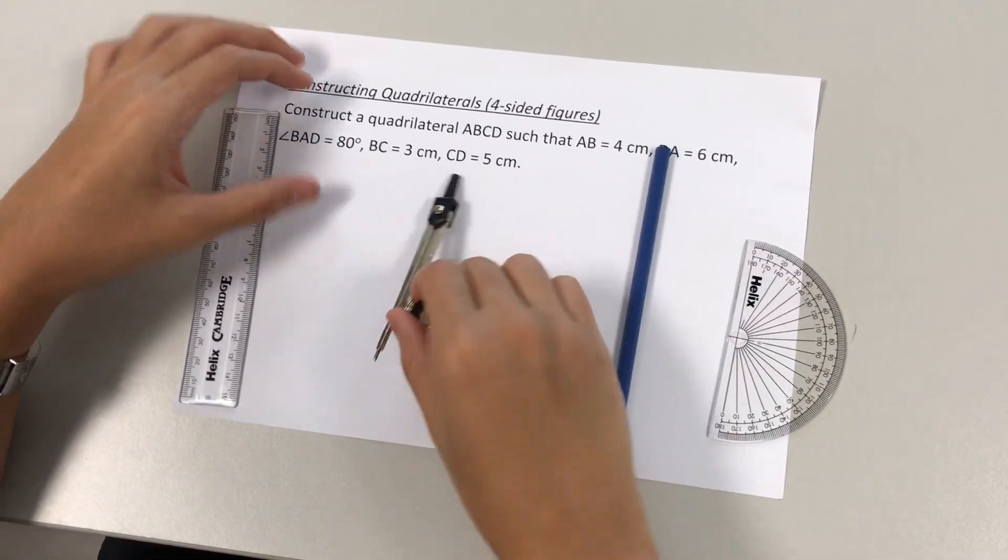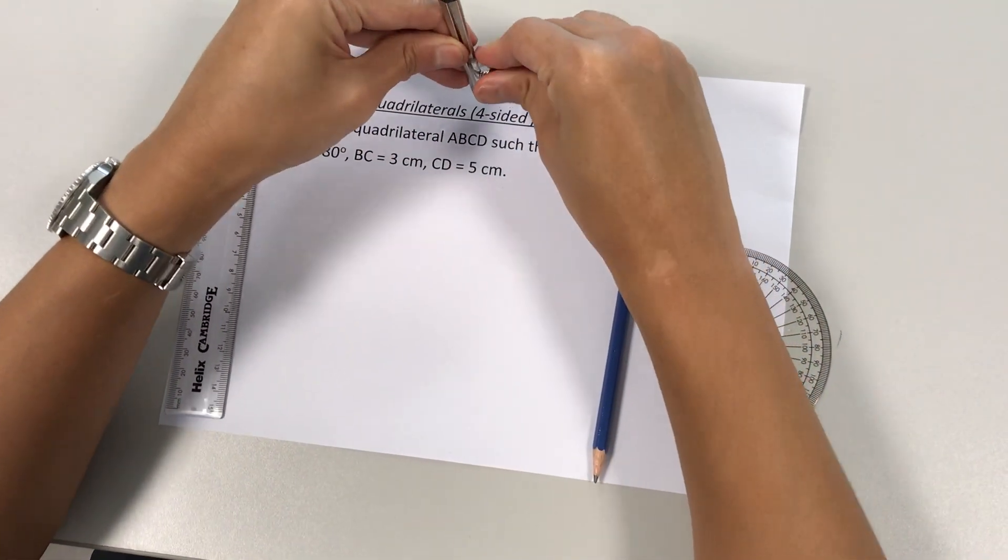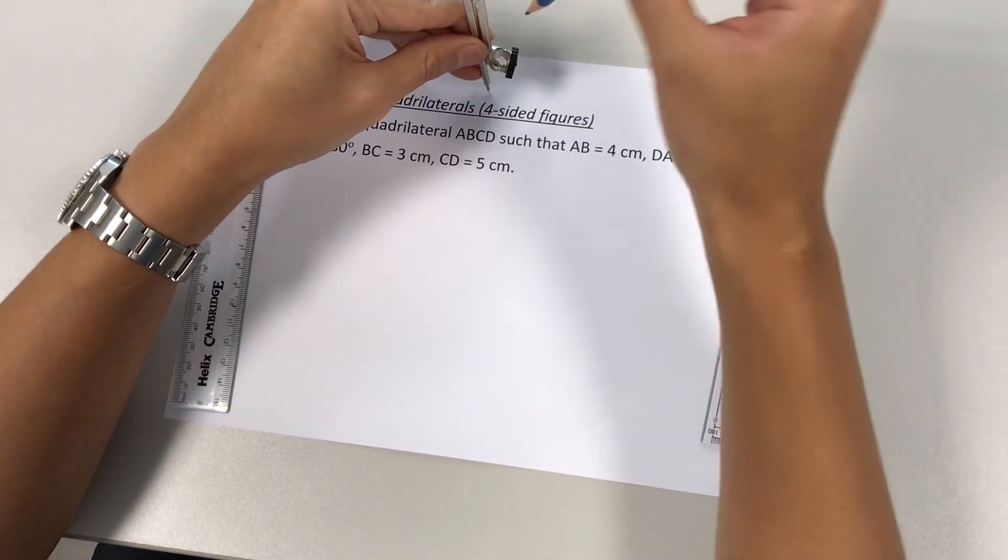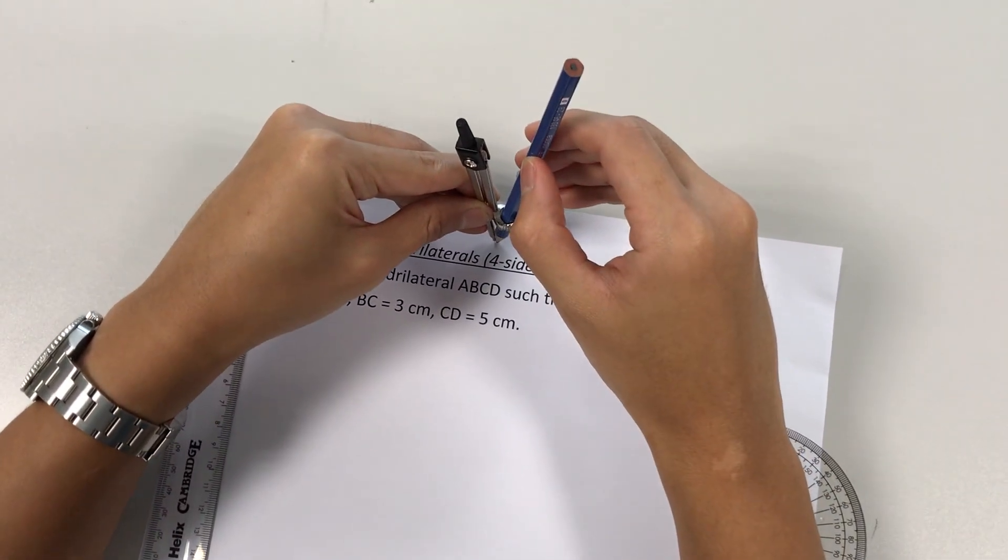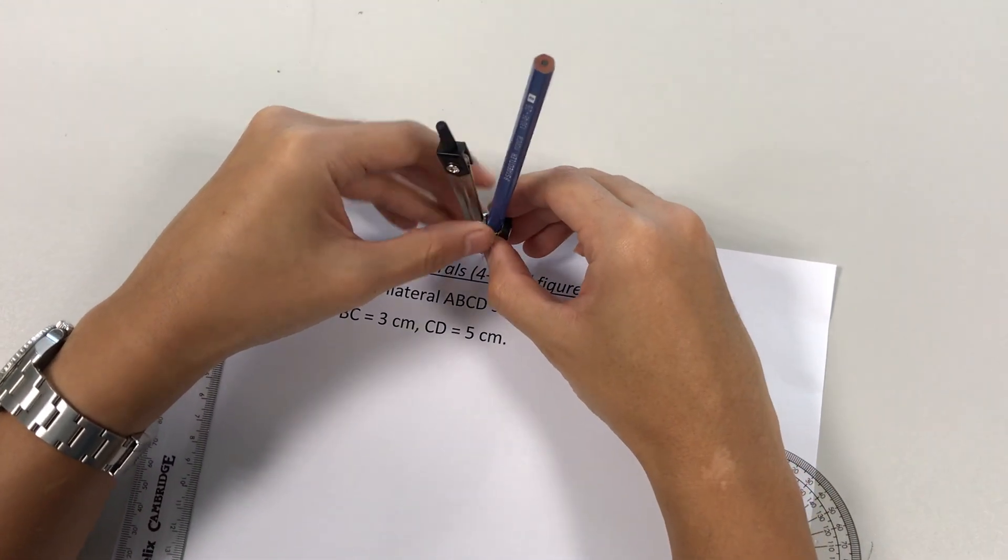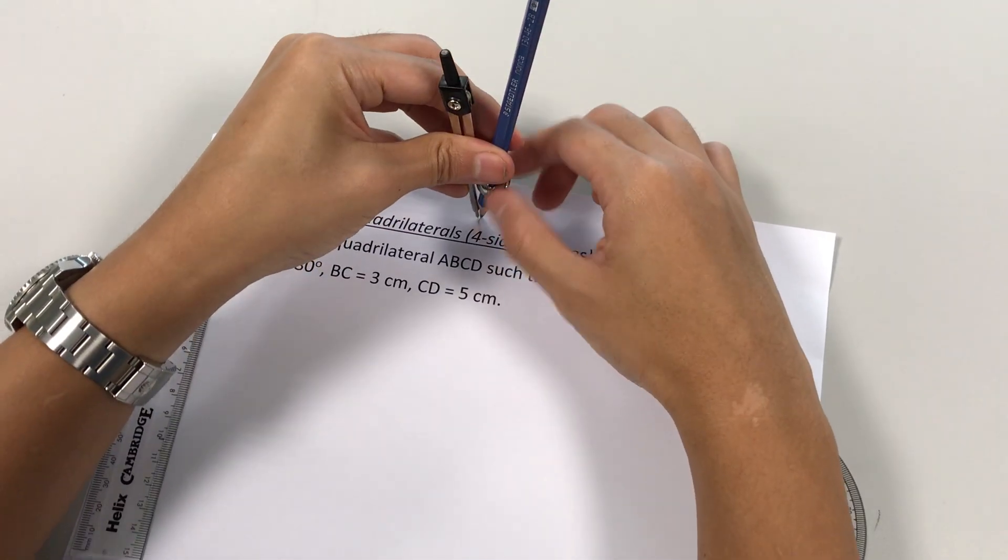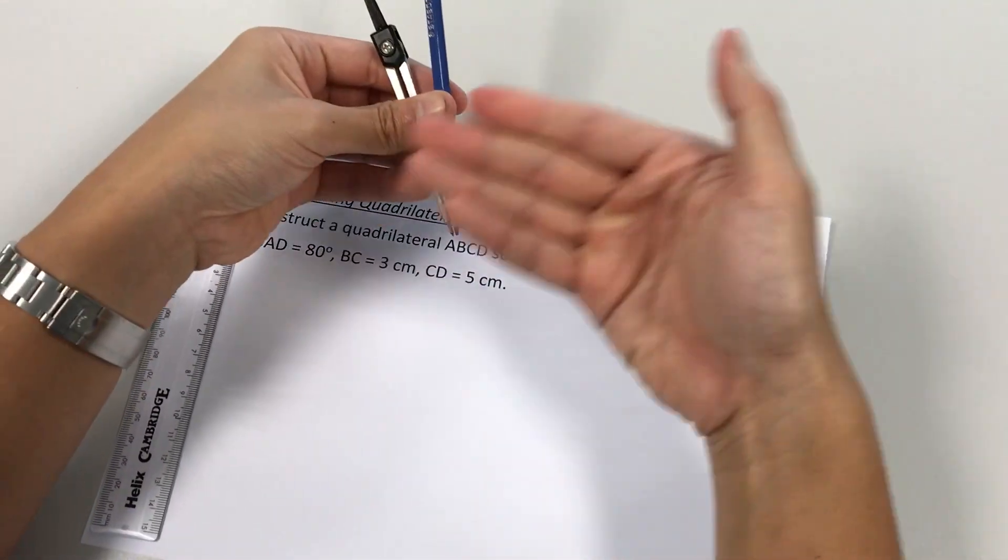First things first, we're going to set our compass. Put it on a level ground, put our pencil through, and we tighten the nut. Okay, all set.